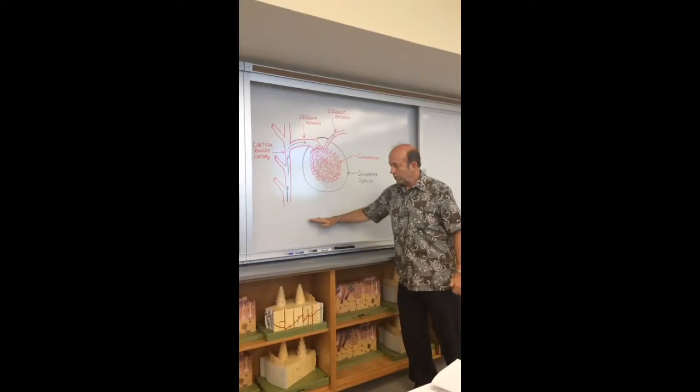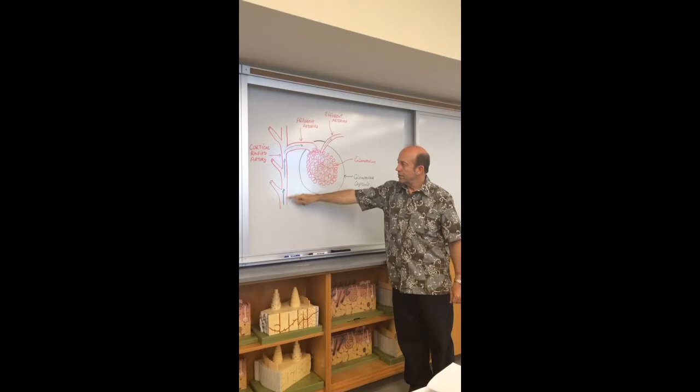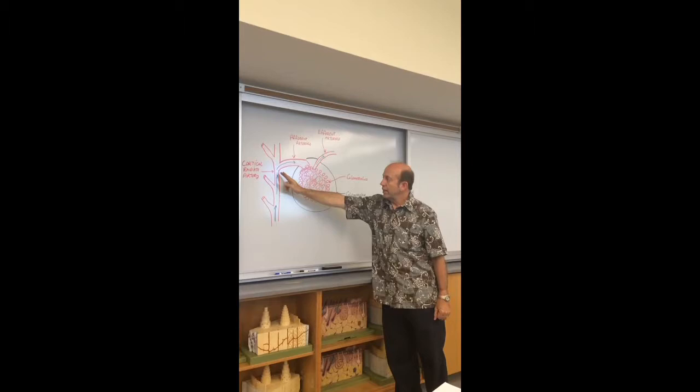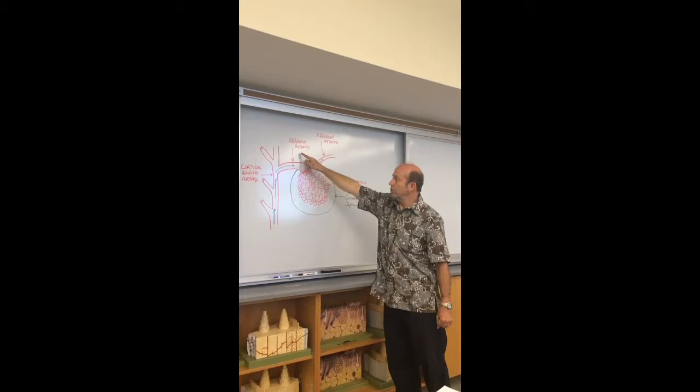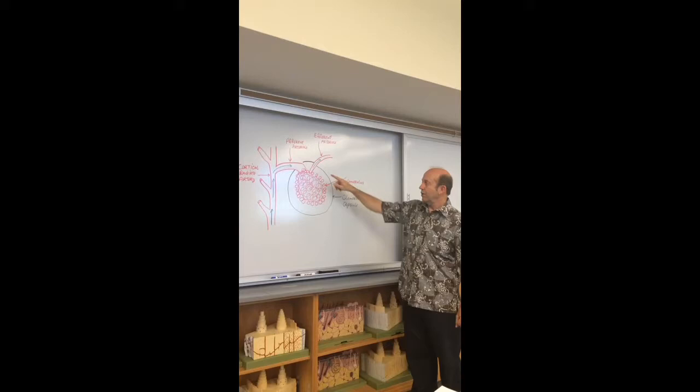Artery here and branches coming off going into the cortex. This is the cortical radiate artery and the direction blood's going. And these little branches off going toward the capillary bed here, this is called the afferent arteriole. It forms this capillary bed called the glomerulus and the arteriole that leaves is called the efferent arteriole.